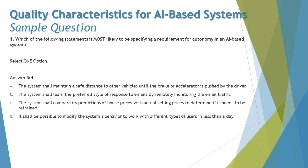Option C says: the system shall compare its predictions of house prices with actual selling prices to determine if it needs to be retrained. This is not a relevant option because this requirement specifies how the system will manage concept drift, most likely caused by the housing market changing. This is about concept drift, not about autonomous decision-making.